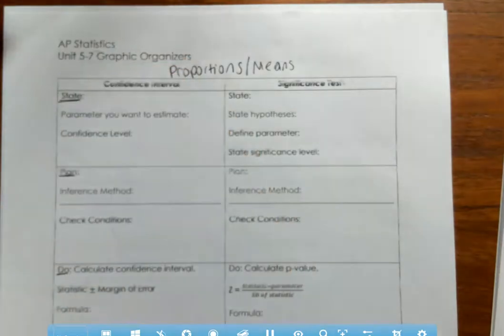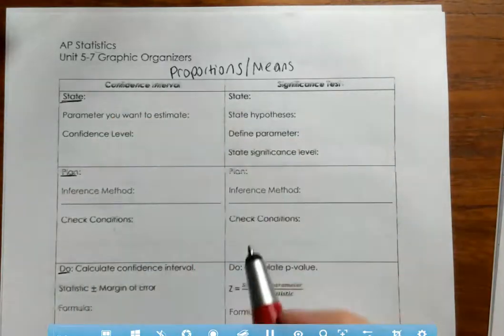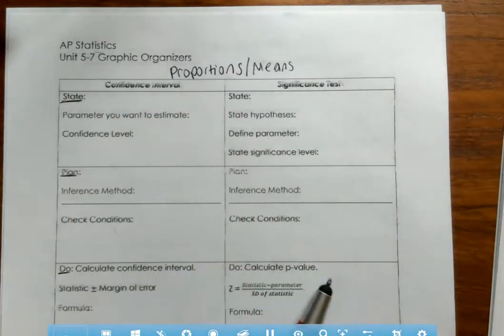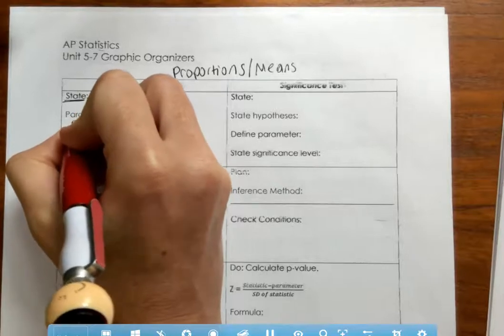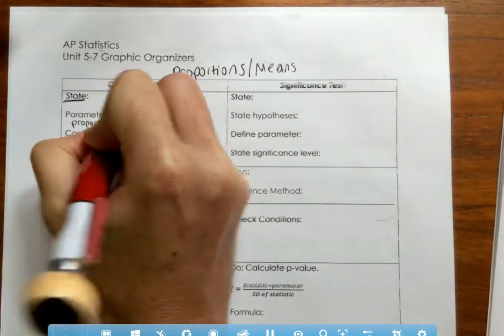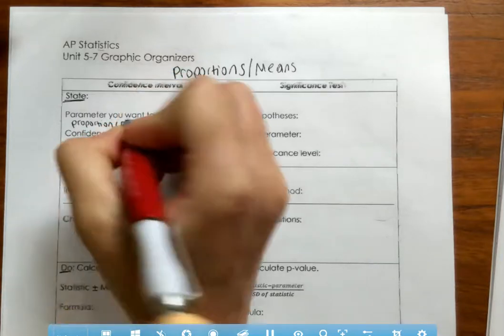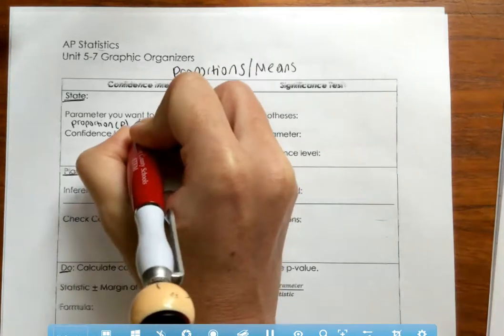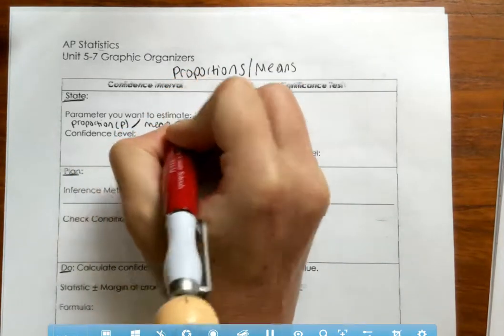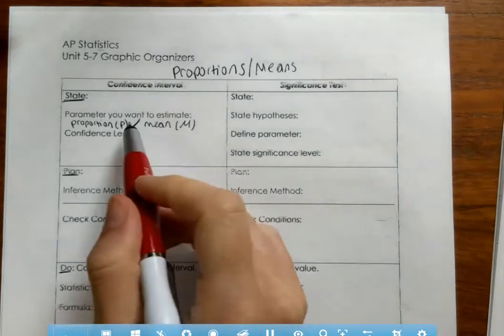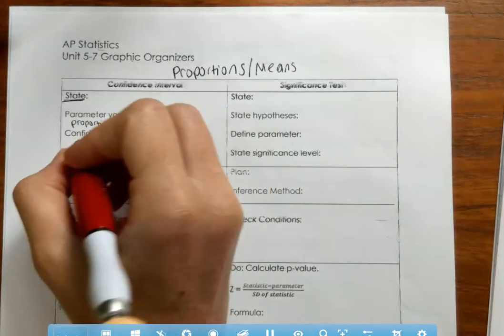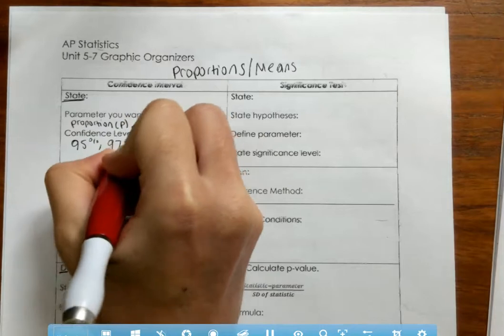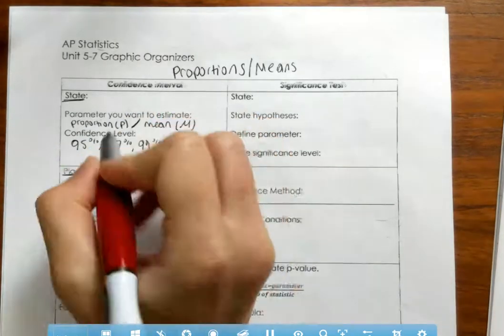Starting off with confidence intervals — we're going to do the whole left column. For the state step, you're going to state the parameter you want to estimate. For proportions, we use P to symbolize the true population proportion. For means, we use the Greek letter mu to symbolize the true mean of the population. Your confidence level is what they tell you in the problem — it could be 95%, 97%, 99%, and so on.